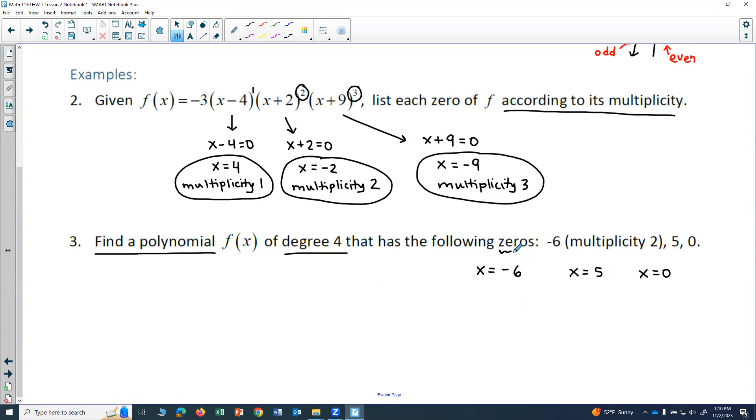And so if I'm working backwards to try to get my factors like I had up here, notice that when I had the zero of x equals 4, it came from a factor of x minus 4 being set equal to 0.